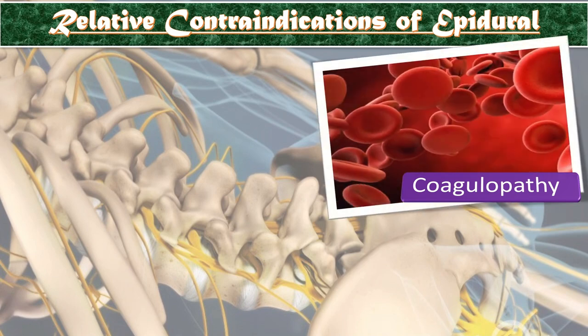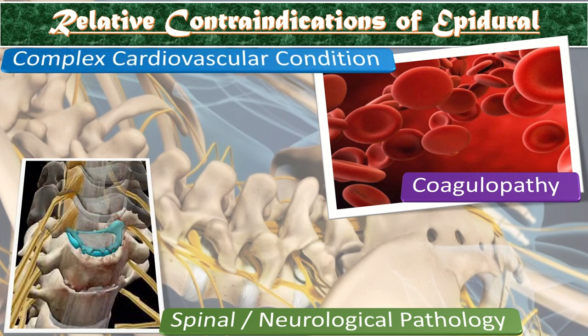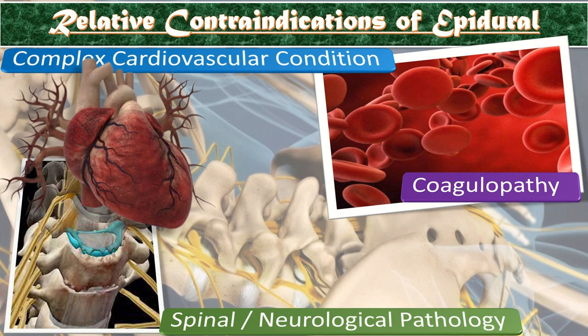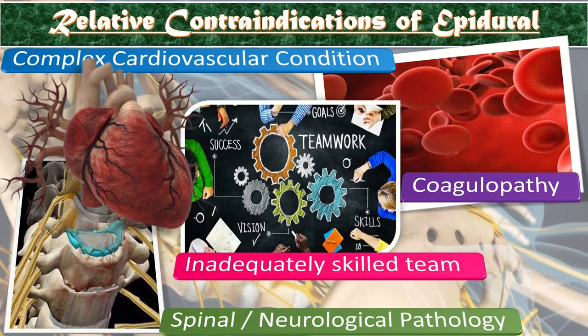What are the relative contraindications of epidural? These include: first, coagulopathy or when the patient is on anticoagulant therapy; second, spinal or neurological pathology or deformity; third, complex cardiovascular conditions such as Eisenmenger syndrome and Marfan syndrome; and fourth, an inadequately skilled team.